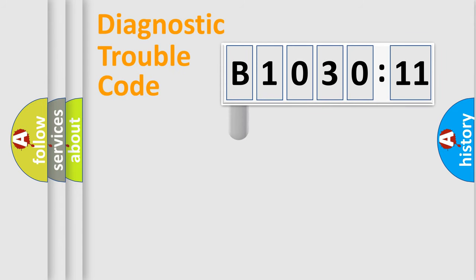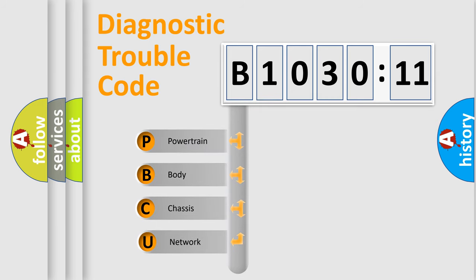First, let's look at the history of diagnostic fault code composition according to the OBD2 protocol, which is unified for all automakers since 2000. We divide the electric system of automobile into four basic units.